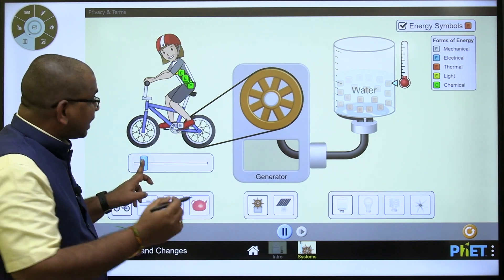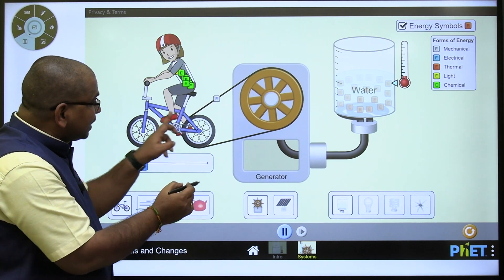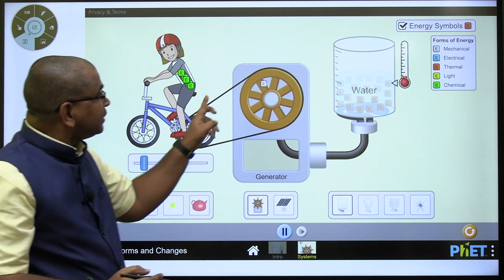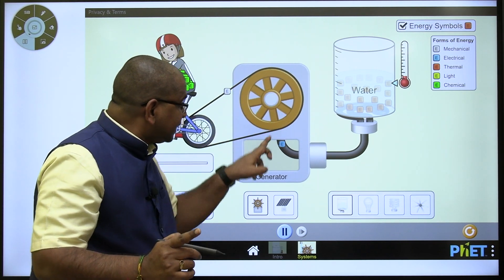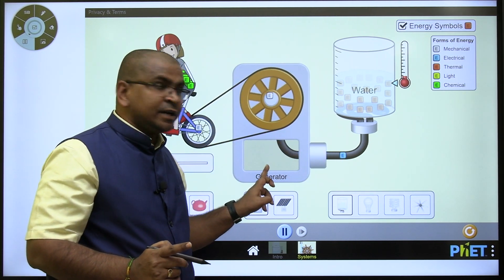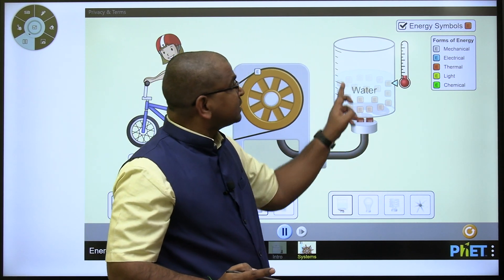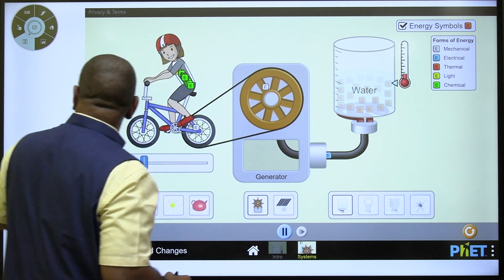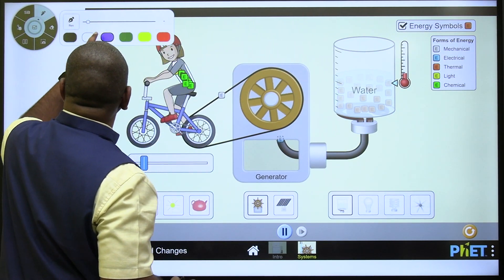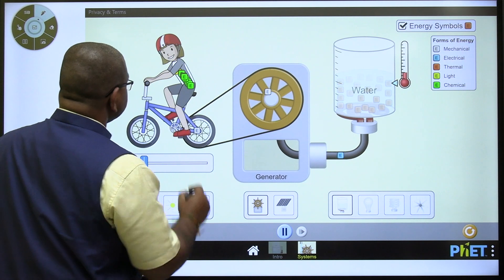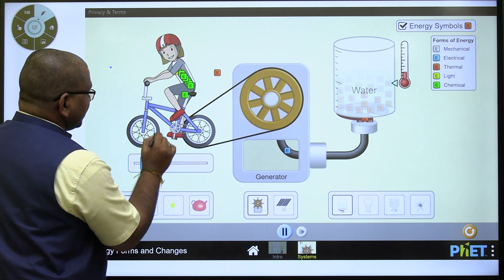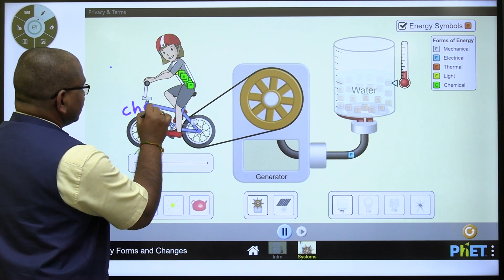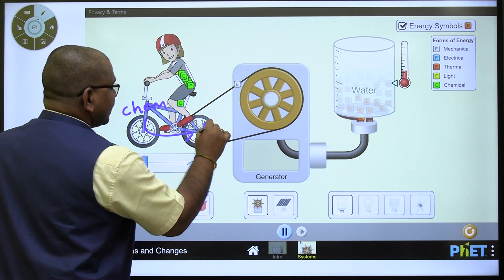It is converted into electrical with the generator, and this electrical energy in the heater is converting into thermal energy. So what is the first kind of conversion here you can observe? The first kind of conversion is chemical to mechanical.